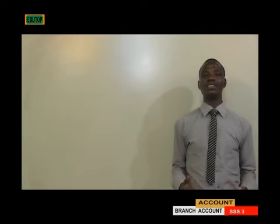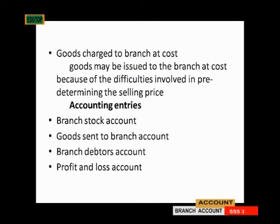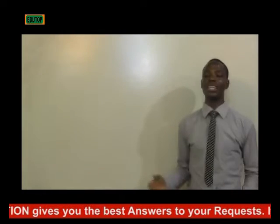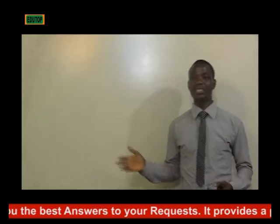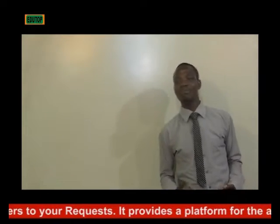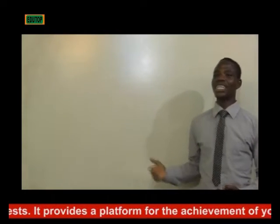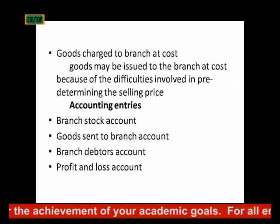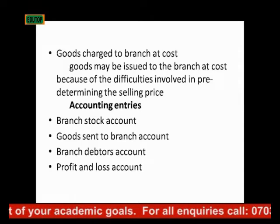Now let's look at the accounting entries under each method, starting with cost price. Goods may be sent to the branch at cost because of the difficulties involved in predetermining the selling price. That is the reason why they normally send goods to the branch at cost. The accounting entries — the ledgers we are going to prepare — include: first, the branch stock account; second, the goods sent to branch account.